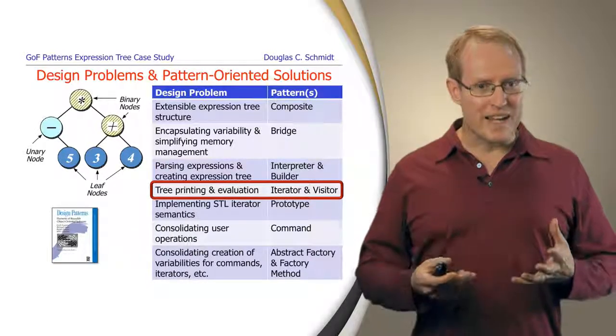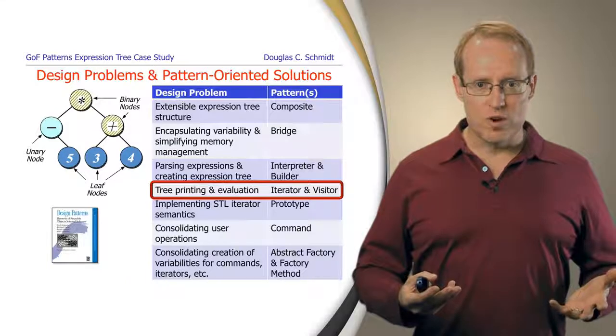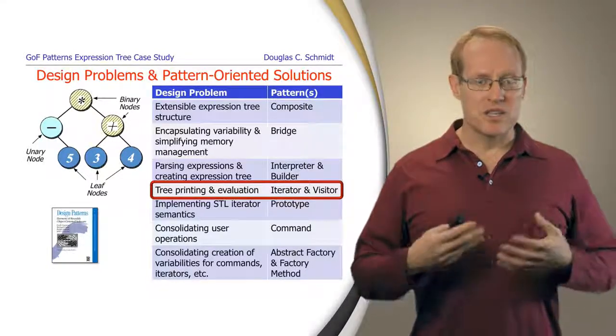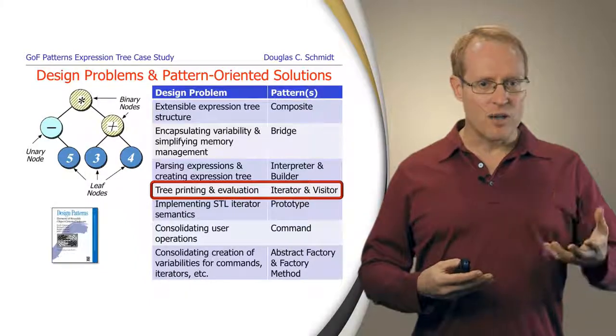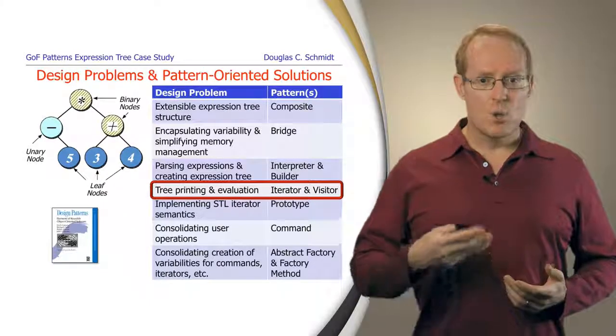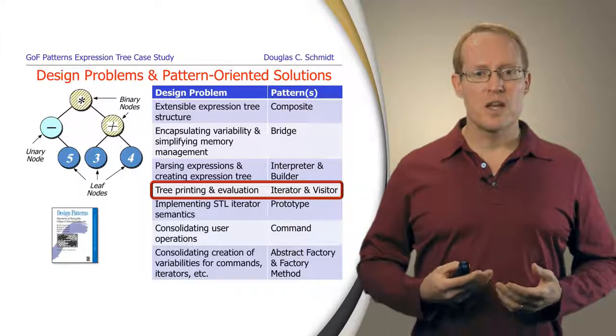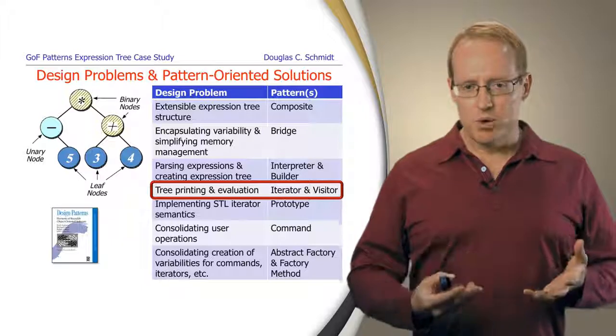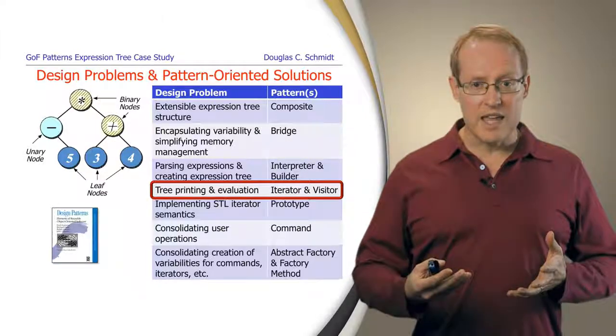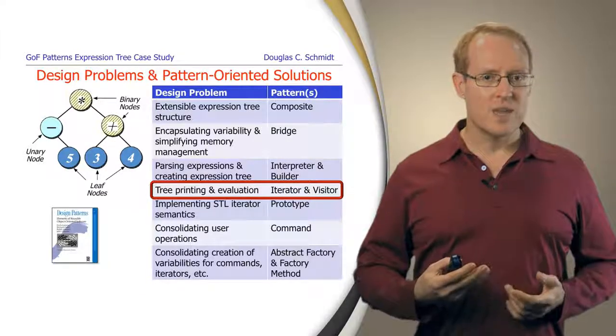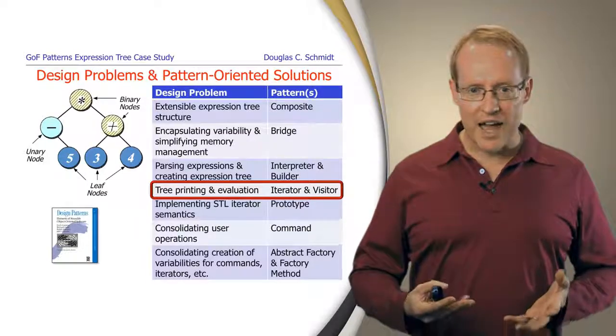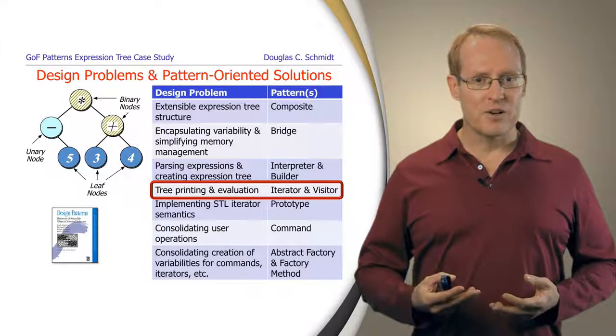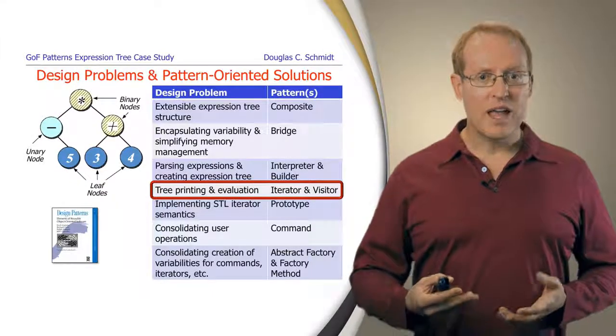Once we've got our tree created, then we can do various things to traverse it and to perform actions upon it. One of the problems we've seen with the algorithmic design was these things were very tightly coupled. It was very hard to make changes to the structure of the tree without affecting the way in which the functions worked and vice versa. In our particular approach, we're going to come up with a way to be able to print and evaluate the tree in a way that doesn't expose the details and allows us to add various kinds of actions without changing the structure. To do this, we're going to apply the Gang of Four patterns for iterator and visitor.